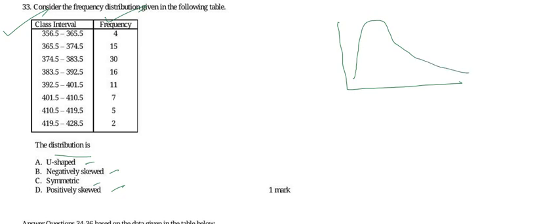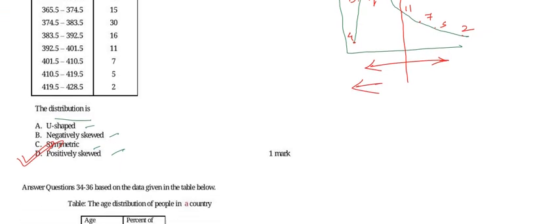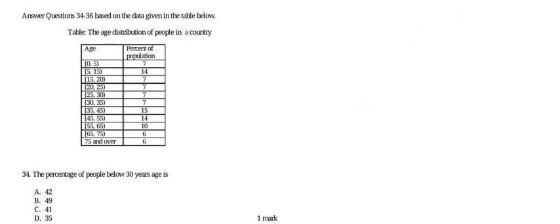The graph roughly shows values like 15, 30, 16, 11, 7, 5, and 2 across the class intervals. Dividing the graph at exactly the center, we can see the peak is on the left side, meaning it is left skewed. A left-skewed distribution is called positively skewed, hence the answer is option D — positively skewed.